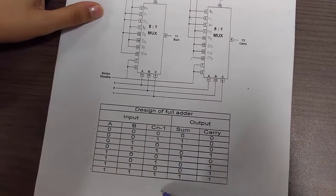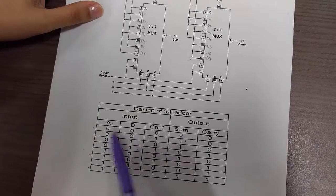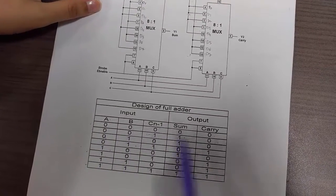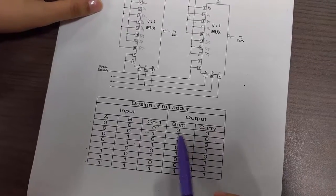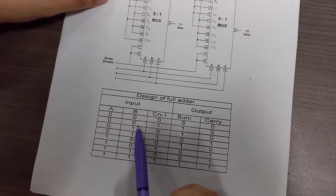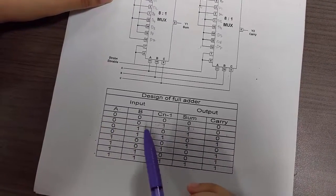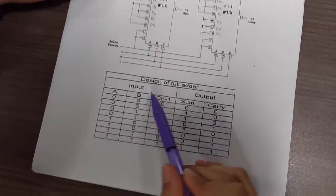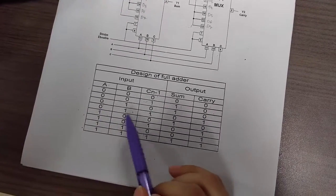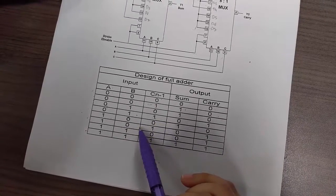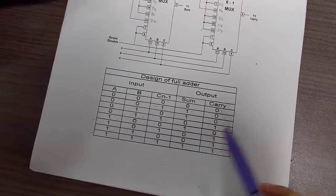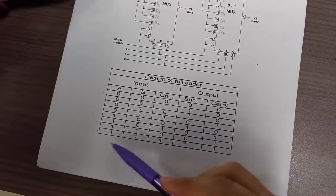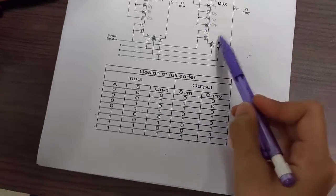We constructed the truth table algebraically. For example, if the input is 0 0 0, then the sum is 0 and carry is 0. If 0 0 1, then sum is 1 and carry is 0. For 0 1 1, sum is 0 and carry is 1, and 1 plus 1 equals 0 with carry 1. Similarly, all other input and output combinations are written and implemented.